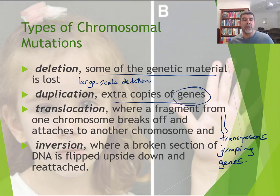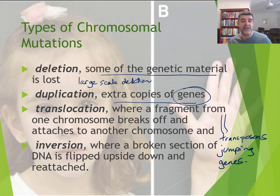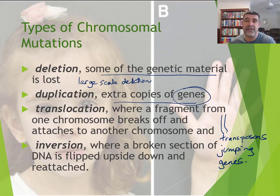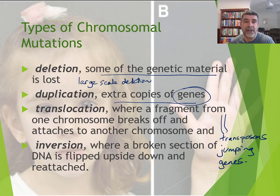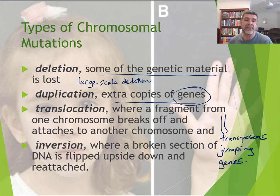These are all different types of chromosomal mutations, and sometimes the consequences are quite significant. Cri-du-chat is one of the consequences of these types of mutations — there's an image of a sufferer on the slide. We will get you to look at examples of these types of chromosomal mutations in class.